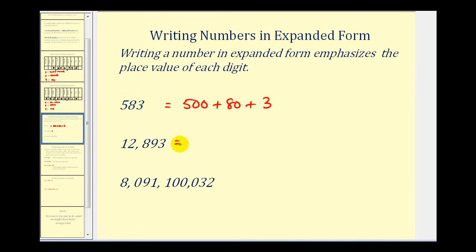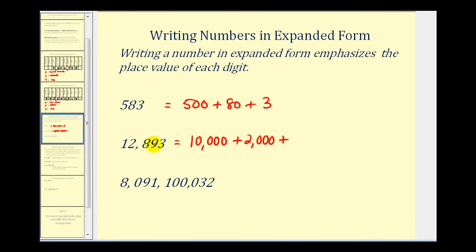So for twelve thousand eight hundred ninety-three, this one represents one ten-thousand, or ten-thousand, plus two one-thousands, or two-thousand, plus eight would be eight hundred, plus this nine represents ninety, and the three represents three.